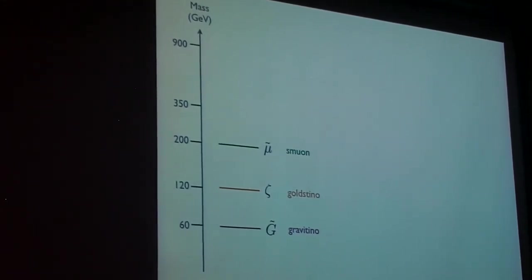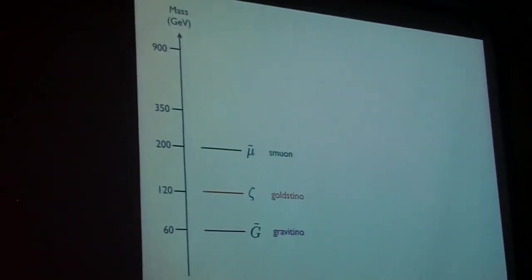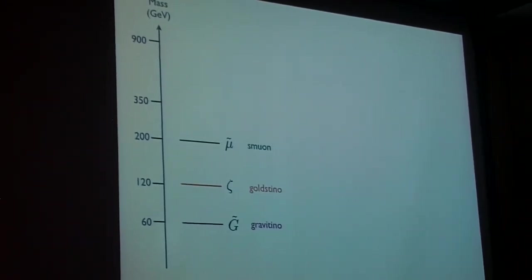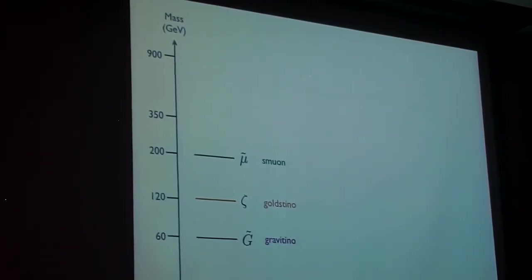You also see two other mass scales that will come in and play another role. Right now we're running 7 TeV collisions at the LHC. We currently have an inverse nanobarn of data. We hope to have an inverse femtobarn of data by the end of 2011.